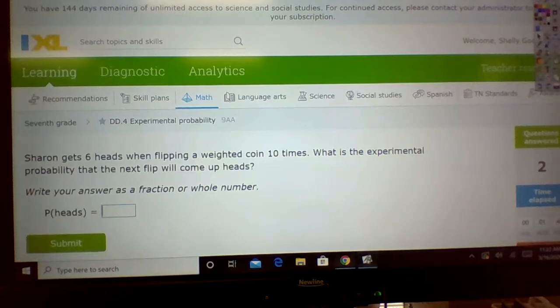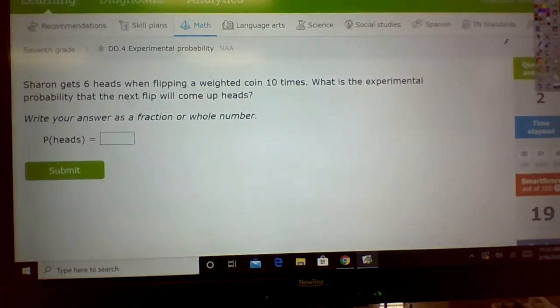Okay, let's look at the next one. Sharon gets six heads when flipping a weighted coin ten times. What is the experimental probability that the flip will come in heads? It's a weighted coin, that's not a normal coin. Six out of ten. We can reduce it if you want by two. That would be three-fifths.